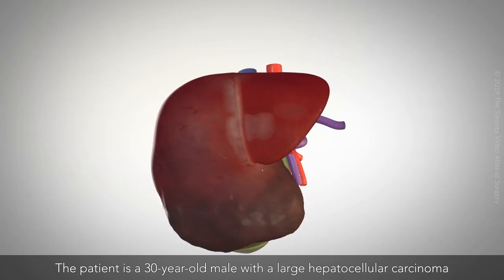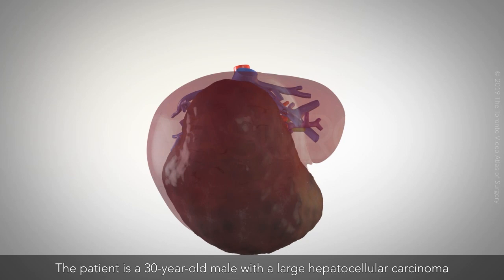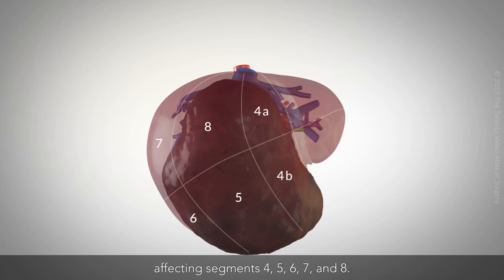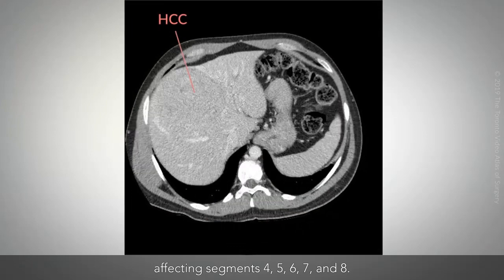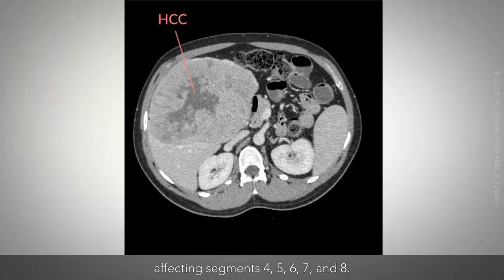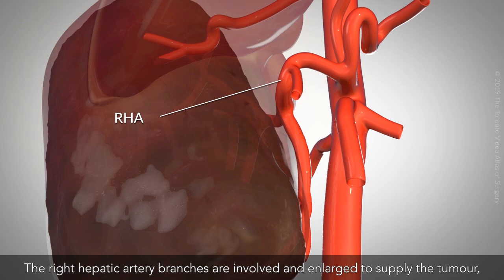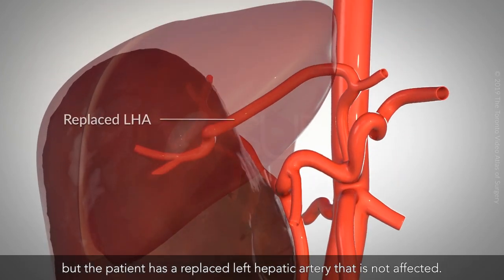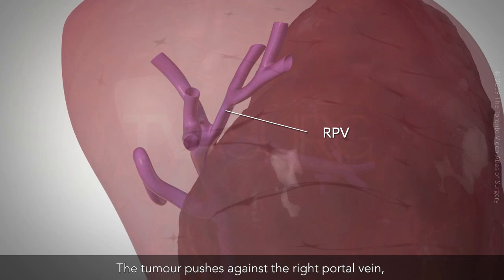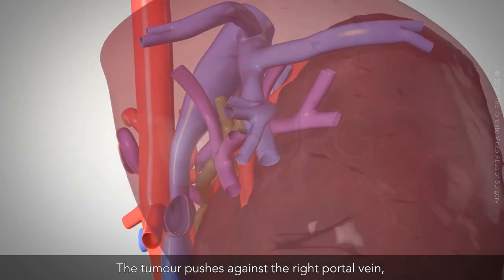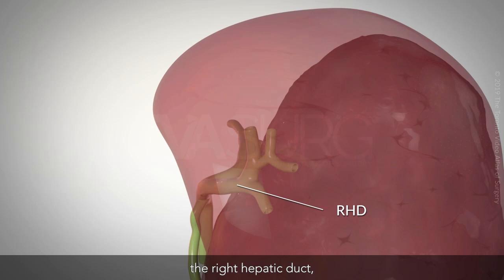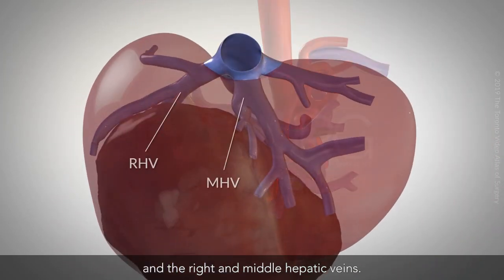The patient is a 30-year-old male with a large hepatocellular carcinoma affecting segments 4, 5, 6, 7, and 8. The right hepatic artery branches are involved and enlarged to supply the tumor, but the patient has a replaced left hepatic artery that is not affected. The tumor pushes against the right portal vein, the right hepatic duct, and the right and middle hepatic veins.